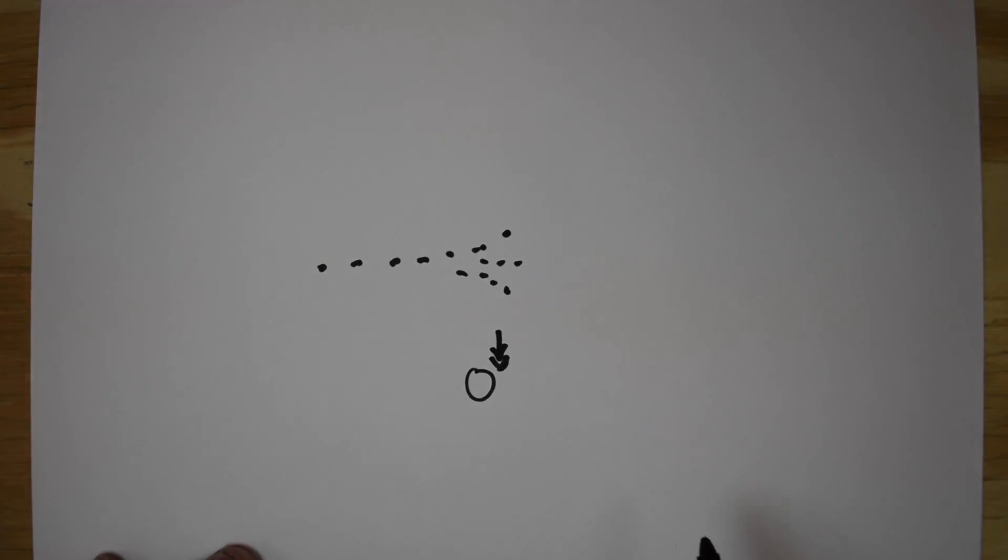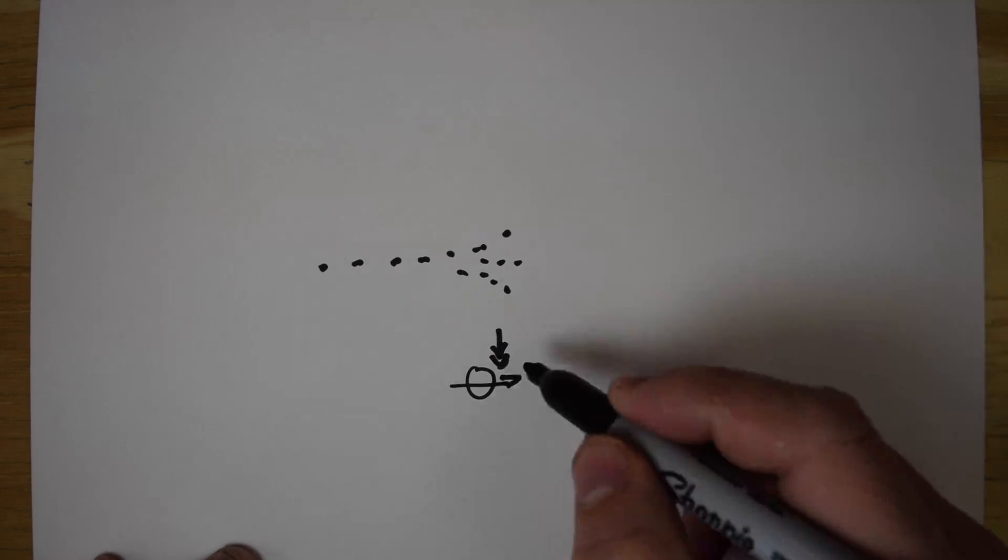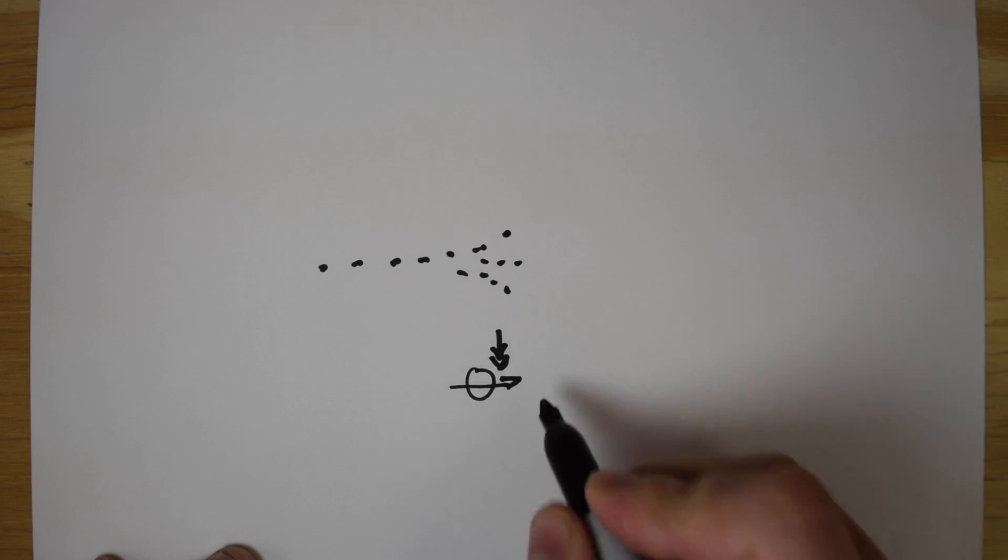There's downward force on the pad. That's from your hop-up bucking. The BB gets pushed past the hop-up nub, and it applies backspin.